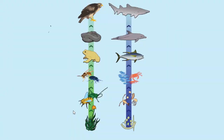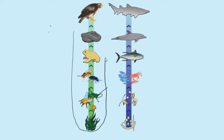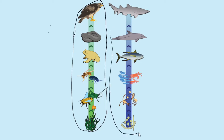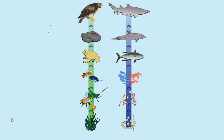Looking at other examples of food chains, we have two food chains — one in a terrestrial ecosystem and one in an aquatic ecosystem. By looking at these organisms we can tell that one is a grassland ecosystem and the other food chain belongs to a marine ecosystem.